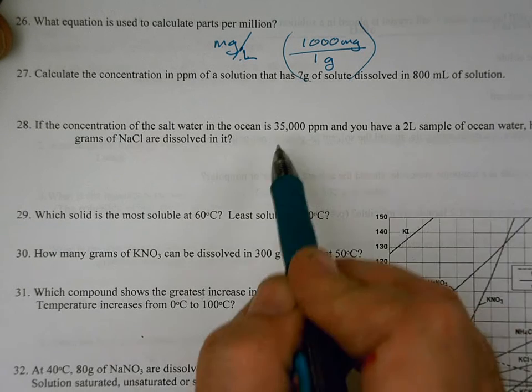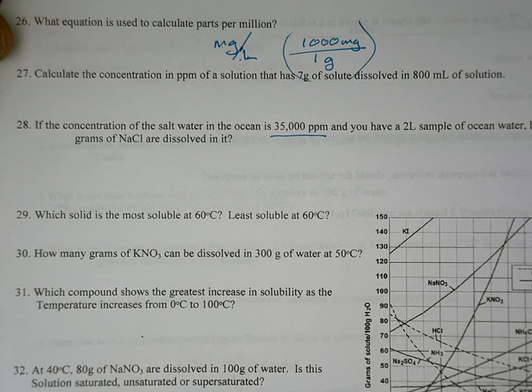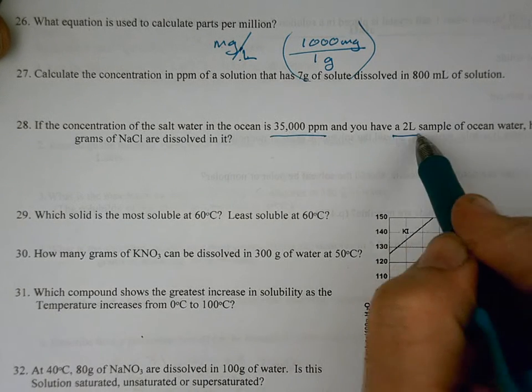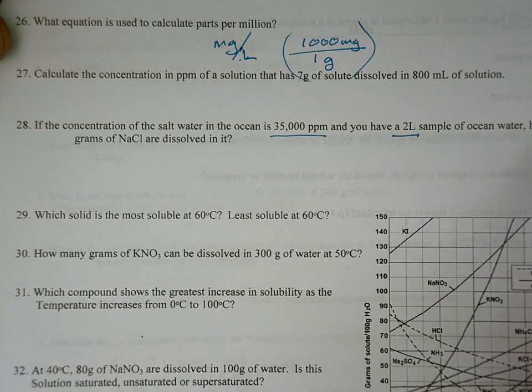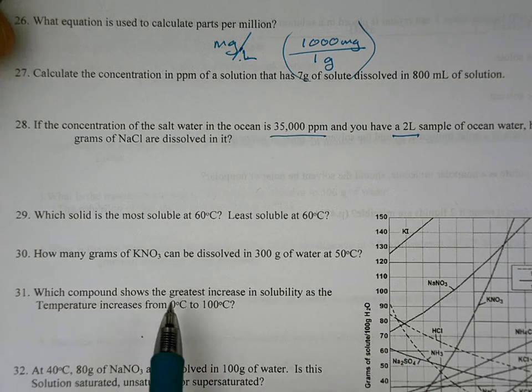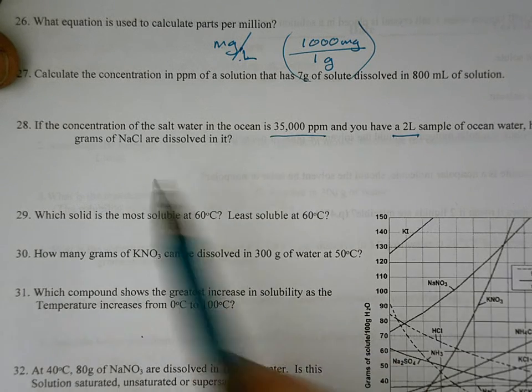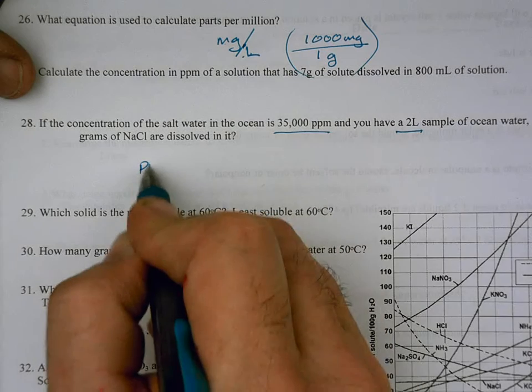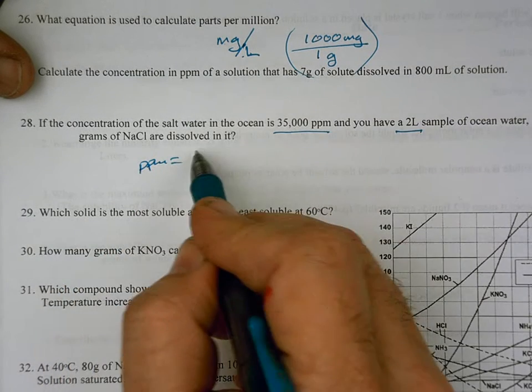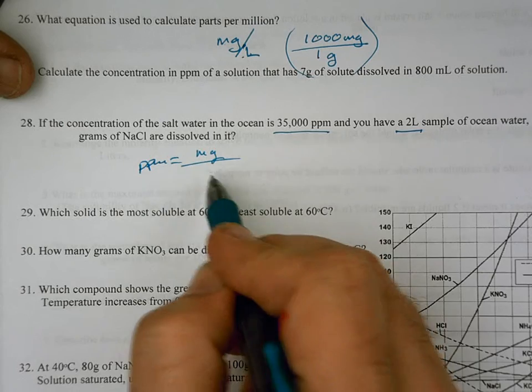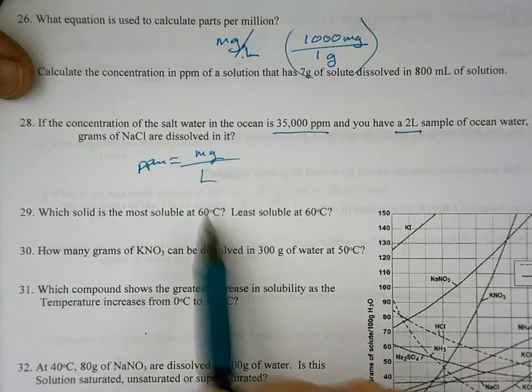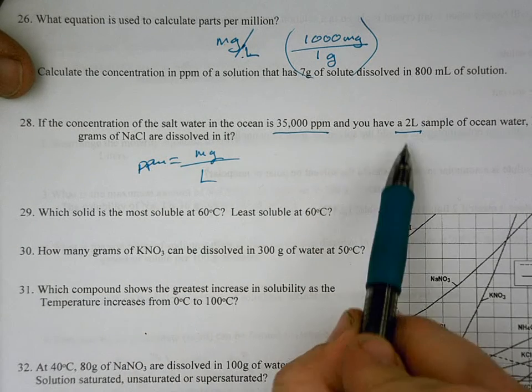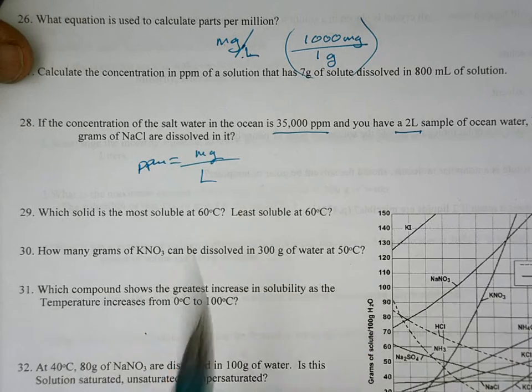So in this problem, they already tell us what the parts per million is, and that we have two liters of solution, how many grams of NaCl are dissolved in it. Now, remember, in this problem, when we first do the first solution, we're going to end up with how many milligrams, and then we'll have to convert that back to grams. So the basic equation for this one is that parts per million is equal to milligrams divided by liters. And in this problem, we're looking for basically, first we've got to solve for milligrams.